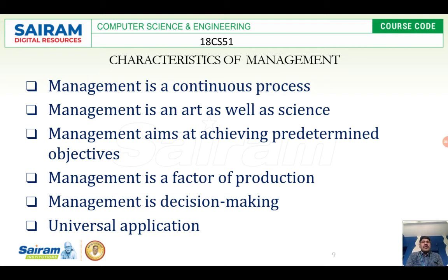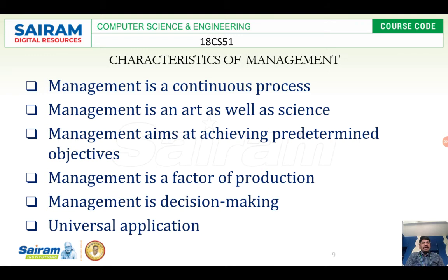Management is a factor of production — in majority production companies, management plays a major role. For example, Ratan Tata made the decision to produce the cheapest car in the world — the Nano — at one lakh rupees. Whether it succeeded or failed is separate, but the decision about production is crucial. That is why management is called a factor of production.